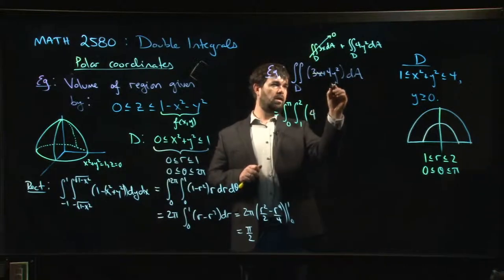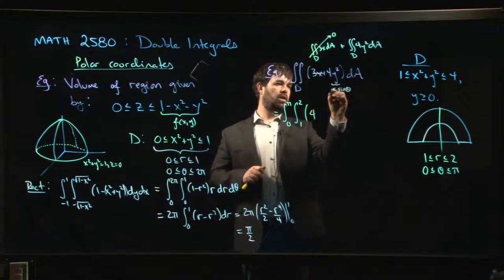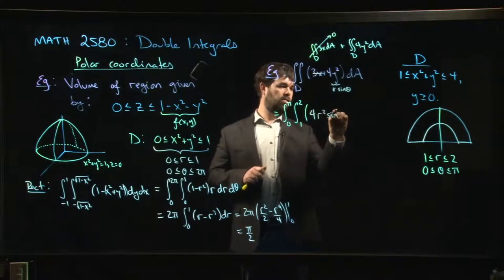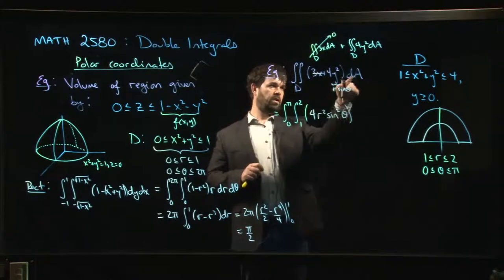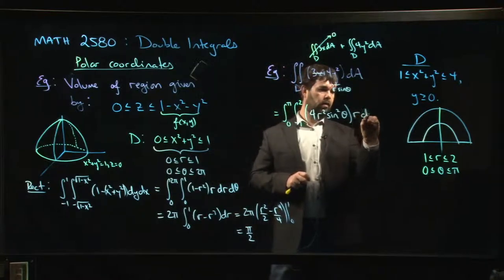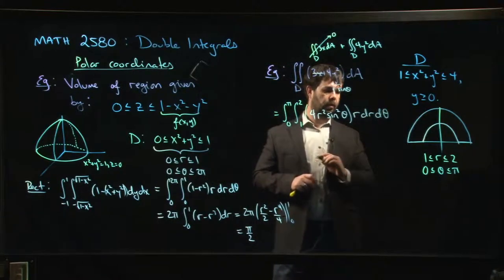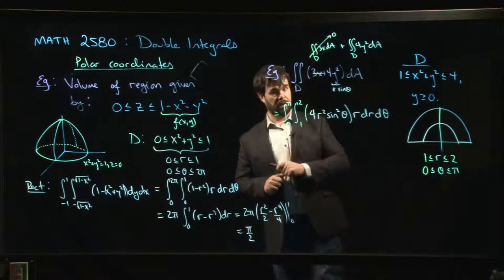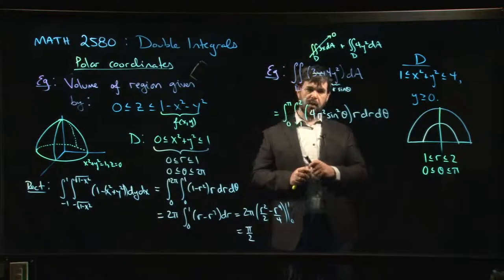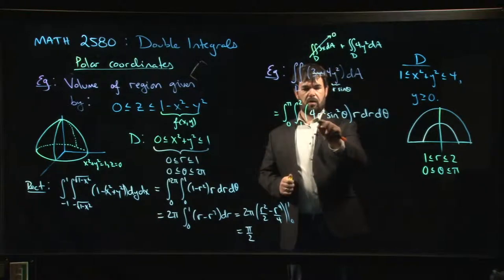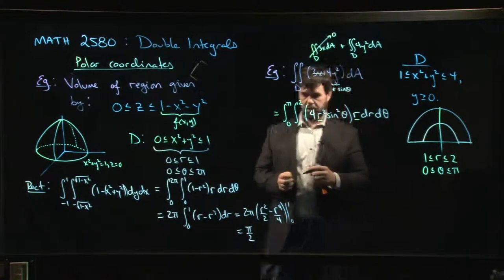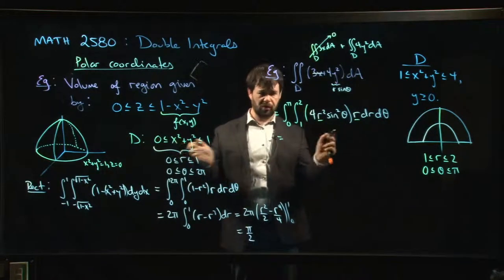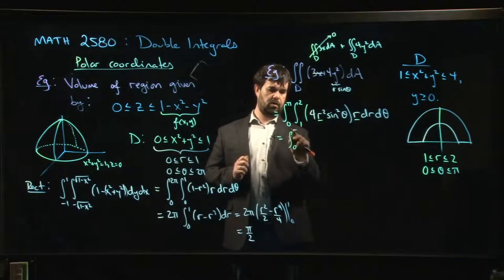So remember that y is r sine theta in polar coordinates. So r squared sine squared theta. And remember that our dA becomes r dr dθ. So this time we can't do the theta integral right away because we do have some theta dependence in the integrand. We've got to deal with them one at a time. Let's deal with r first. So first note that I have r squared times r. So I have r cubed. So maybe I want to take care of that first. 4 r cubed is the derivative of r to the 4.